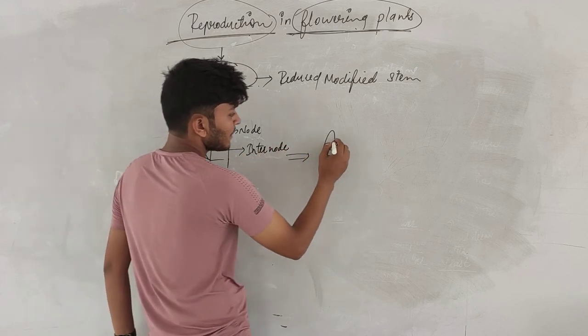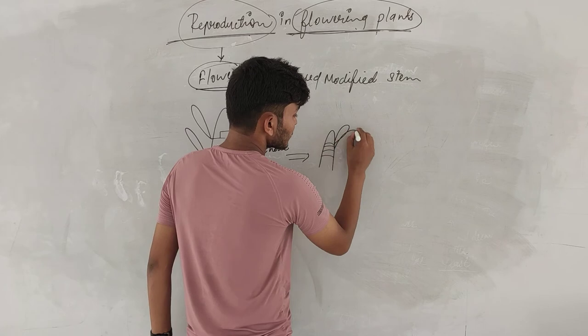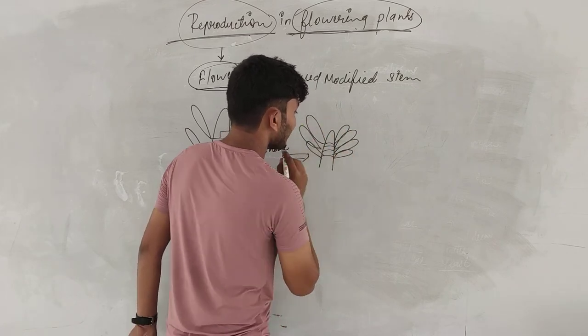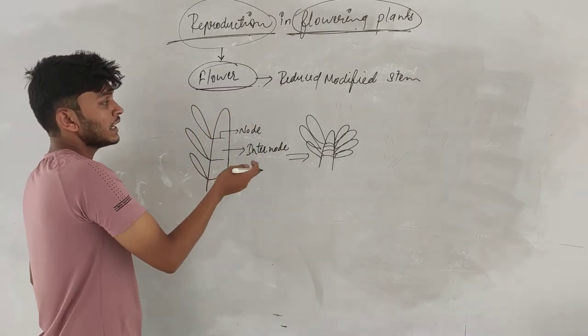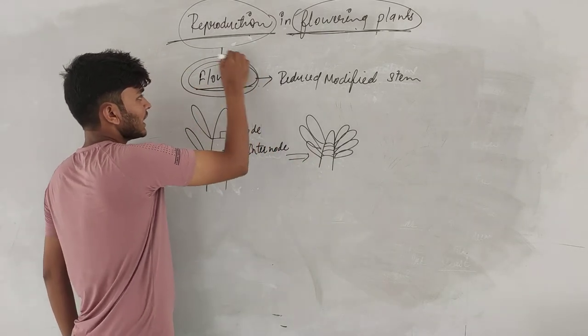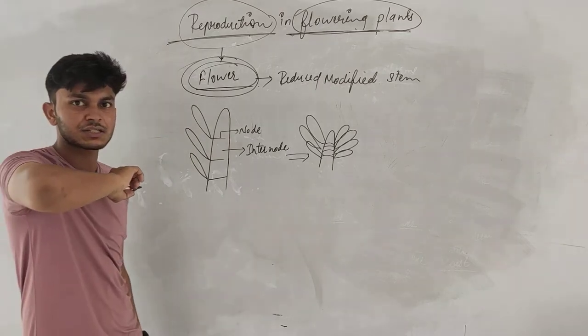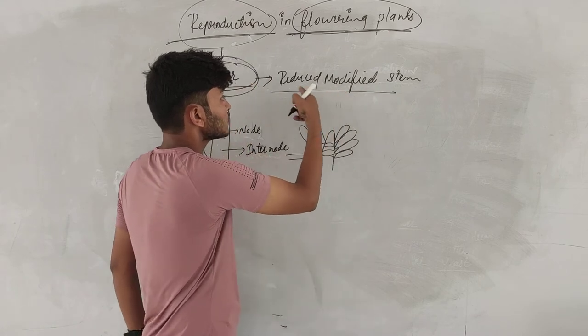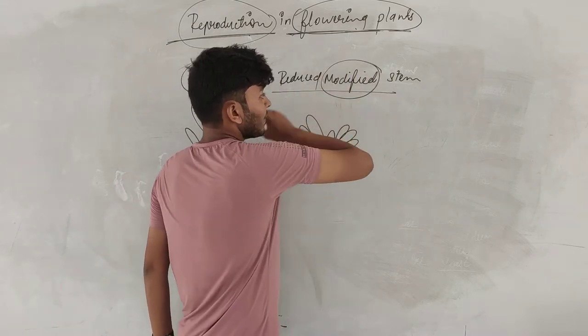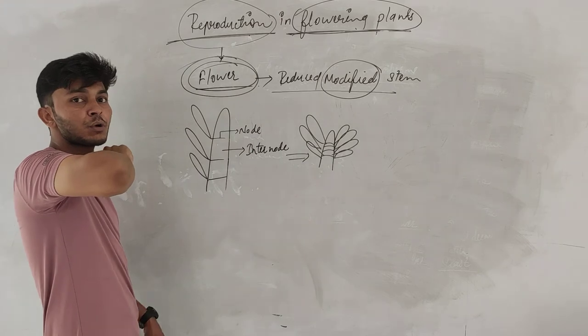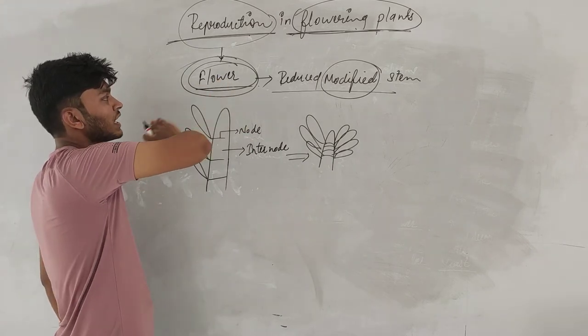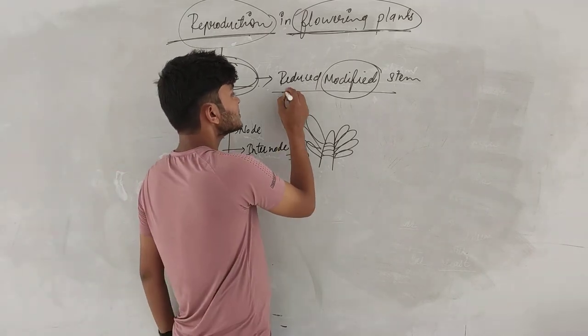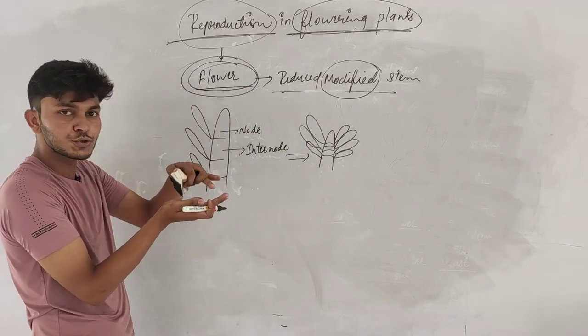This structure is known as flower. This is a definition. The flower is a modified stem. The stem is modified. It means that the stem is modified and changed into flower. It is reduced in the sense of stem. The reason, the stem is reduced, it is suppressed.